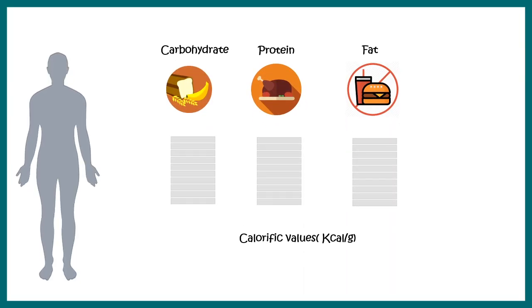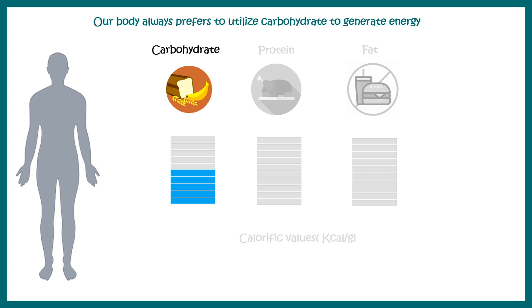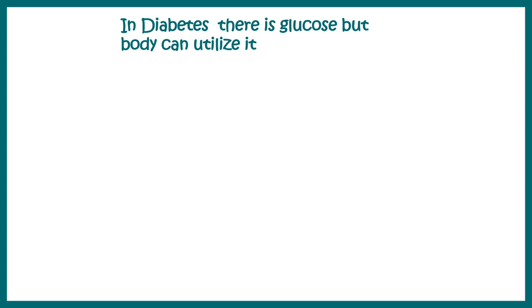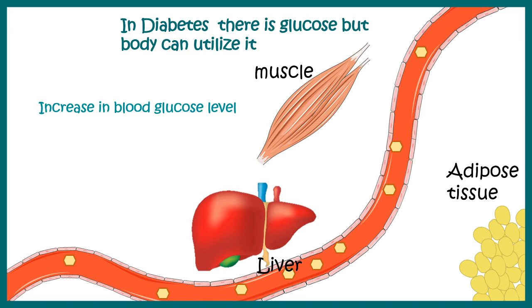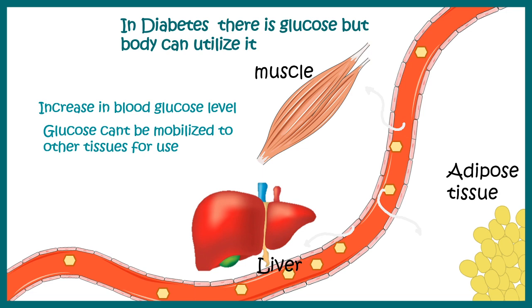There could be consequences associated with elevated blood sugar, but why is elevated blood glucose level bad? Our body uses carbohydrates, proteins, and fats as fuel, and if the body has a choice, it would be driven more towards carbohydrate utilization. Carbohydrate is not bad, and neither is glucose — but when the body cannot mobilize glucose, that is the problem. In diabetes, glucose is present but the body cannot utilize it.